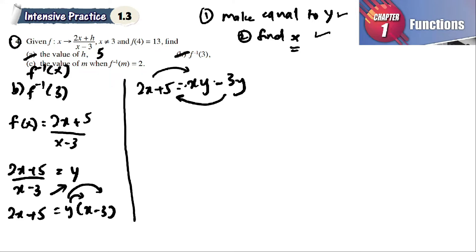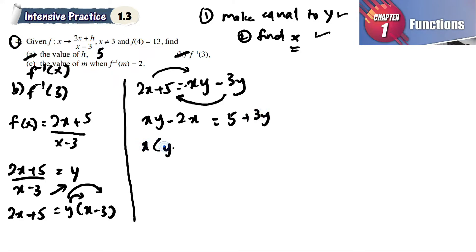We rearrange by moving 2x to the other side and bringing -3y across. We get xy - 2x = 5 + 3y. When a term moves to the other side, the sign changes. So x(y - 2) = 5 + 3y.